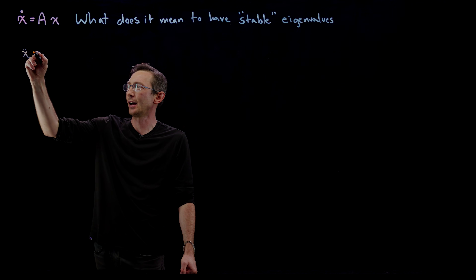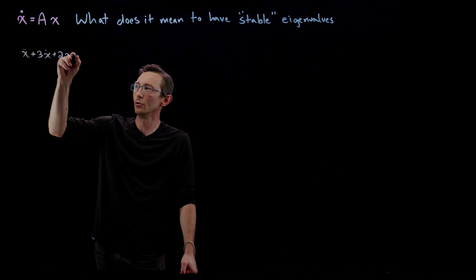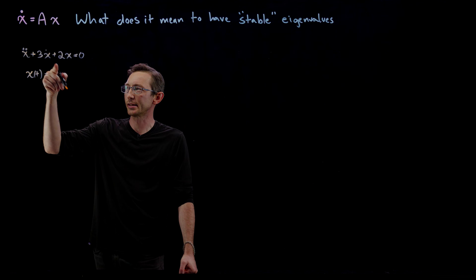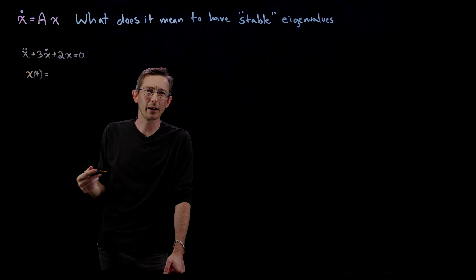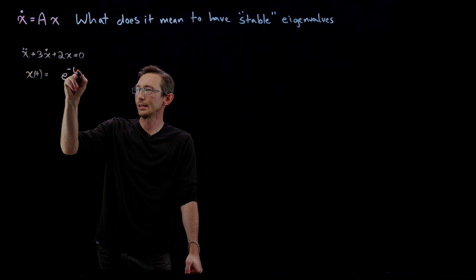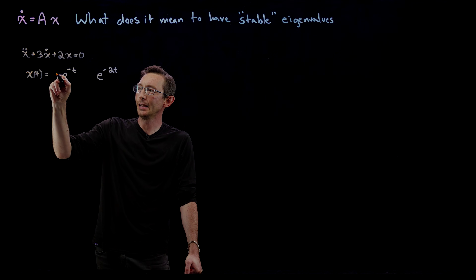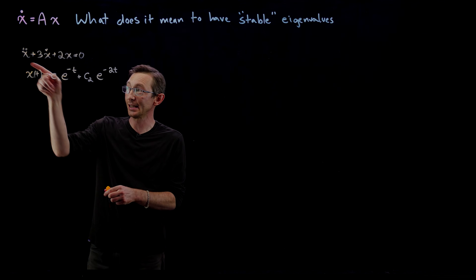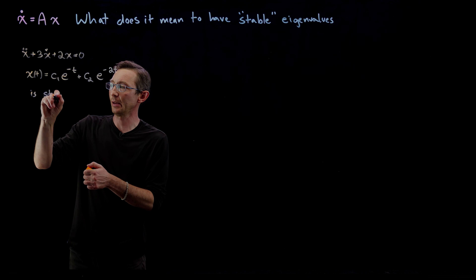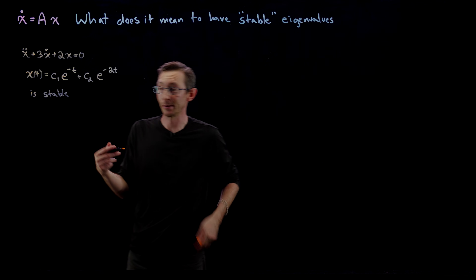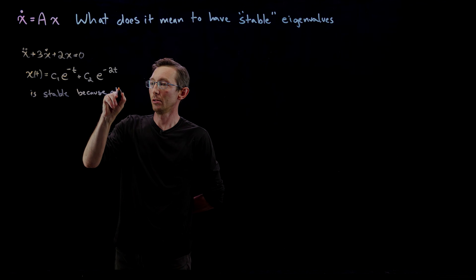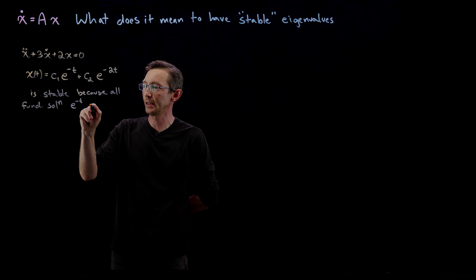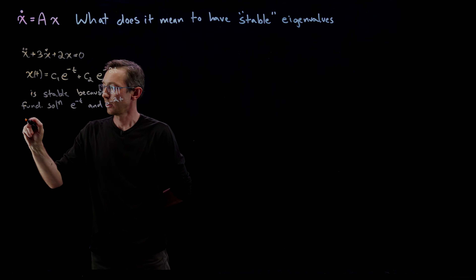When we talk about stability, consider a simple differential equation like x-double-dot plus 3x-dot plus 2x equals zero. The solutions are two fundamental solutions found from the characteristic polynomial. Those two characteristic solutions are e to the minus t and e to the minus 2t. Any linear combination of these two solutions is also a solution, and we would say this system is stable because all of the fundamental solutions are stable exponentials.